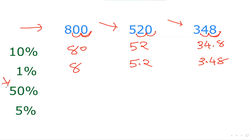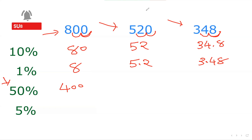Now, 50 percent of any number is nothing else but half of the number. For 800, half is 400 — so 400 is the 50 percent. For 520, I'll just think about 52, and half of 52 is 26, then I add the zero back — so 260 is the 50 percent of 520.